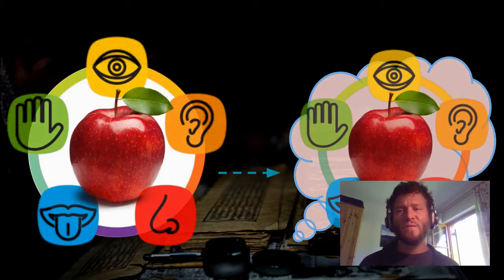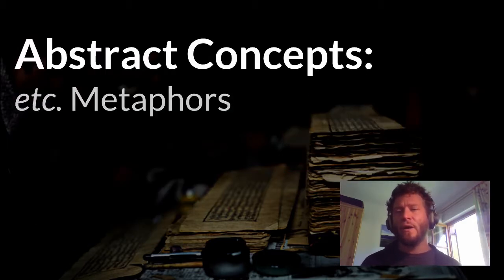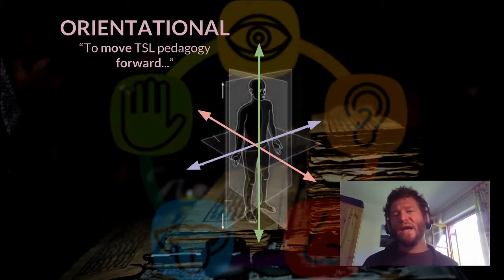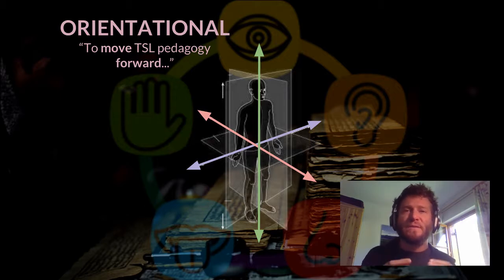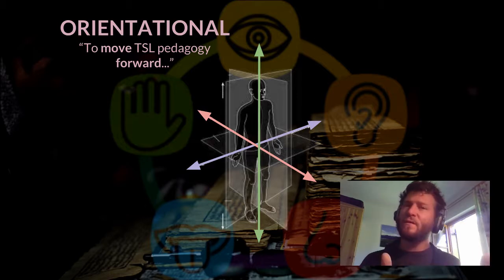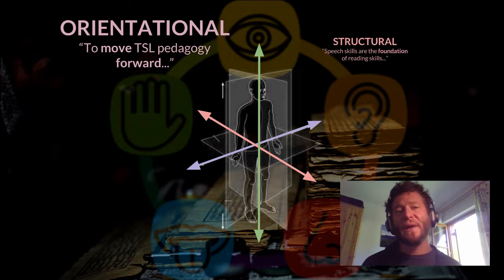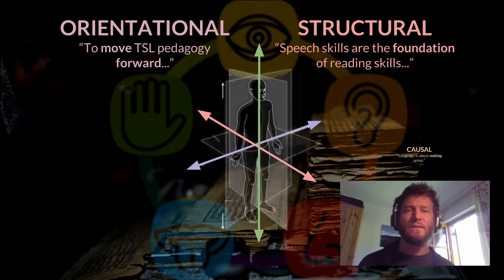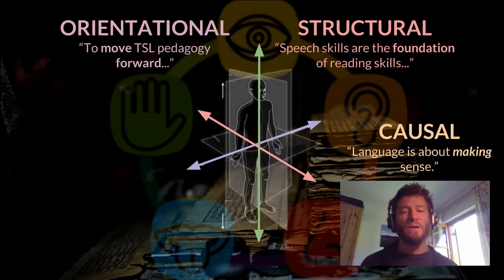It's also true of more abstract and sophisticated language. We have, for example, orientational metaphors — 'moving Tibetan second language pedagogy forward.' We have a sense of looking forward or looking back. We have structural metaphors — 'speech skills are the foundation of reading skills.' We have causal metaphors — 'language is about making sense.'